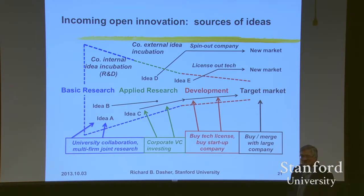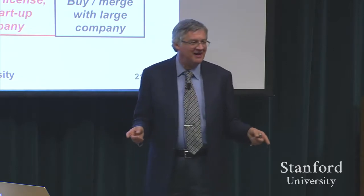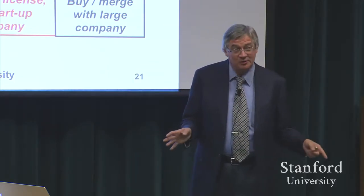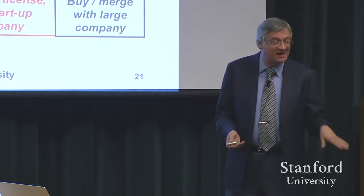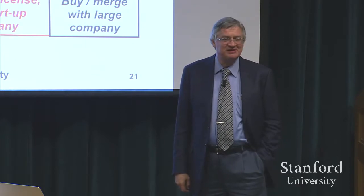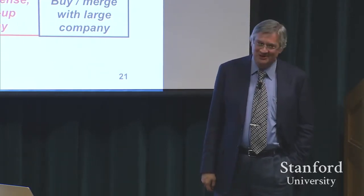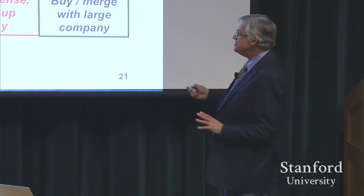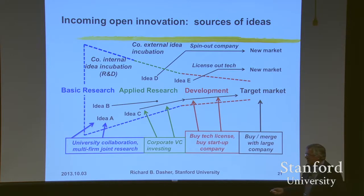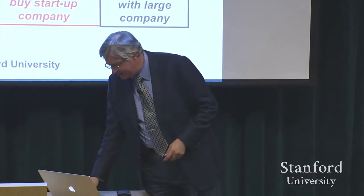Even further out, Google supports a lot of university research. My estimate is that Google spent about $20 million supporting university research. The distinctive thing about university research support is that companies have very little control — academic freedom is a big deal. What you see is most of the money spent closer to market, and the further out you are, they spend less money and have less control, but they really want to see a broader range of ideas. This is kind of how open innovation works here.